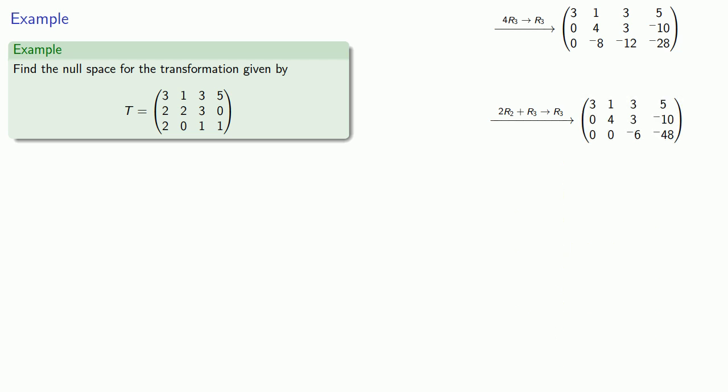Since every entry in the last row has a common factor, we can multiply it by negative one-sixth and simplify it. This gives us our system in row-reduced form.